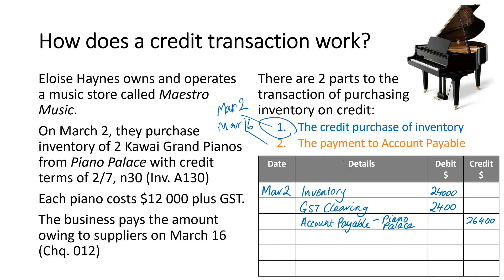An account payable is a liability, and this liability is increasing — I'm going to eventually have to pay back Piano Palace that $26,400. I also need to write a narration saying something like 'purchased two Kawai Grand Pianos on credit, Invoice A130.' Remember I need to state what the inventory item is, how many, and include the source document.